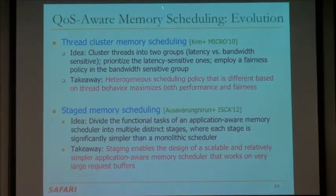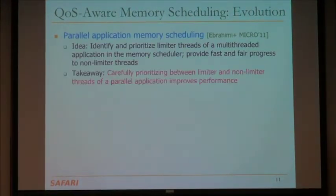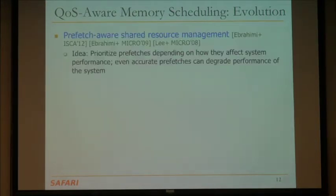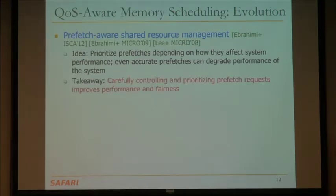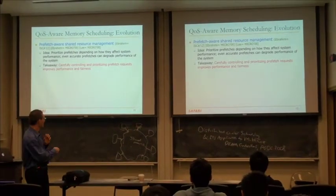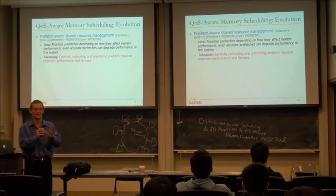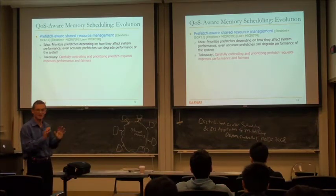Today we'll cover thread cluster memory scheduling and staged memory scheduling. You already read the parallel application memory scheduling paper — this is where you determine the limiter threads and prioritize them in the memory scheduler. One thing to keep in mind: we have not talked about prefetchers, which are an important source also injecting into shared resources. It's not only the core generating requests but also the prefetcher. So far in the memory scheduling discussion, we've assumed everything is a demand. In real systems you have prefetches — how do you prioritize them versus demands? How do you throttle some of the prefetchers if they're being too aggressive?